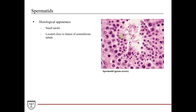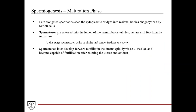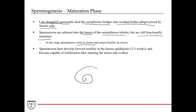Late-stage spermatids have small nuclei and are located close to the lumen of the seminiferous tubule. During the maturation phase, late elongated spermatids shed their cytoplasmic bridges into residual bodies, which are phagocytized by the Sertoli cells. The mature spermatids are then released as spermatozoa into the lumen of the seminiferous tubules, but they are still functionally immature — they can swim in circles but have no directional motility. Forward motility develops in the ductus epididymis over two to three weeks, and they become capable of fertilization only after entering the female reproductive tract.